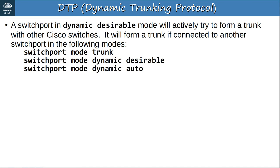An interface in dynamic desirable mode will use DTP negotiation to form a trunk if the connected interface is in trunk, dynamic desirable, or dynamic auto mode. However, if the other interface is in access mode, it will not form a trunk — it will be an access port.